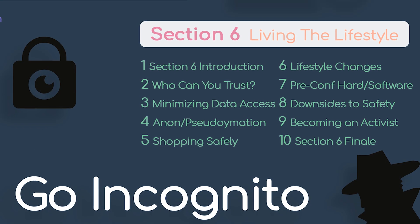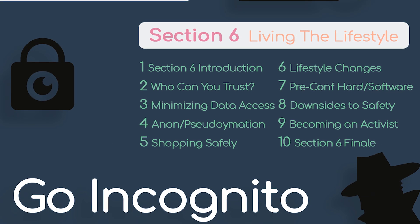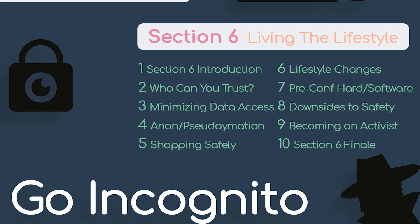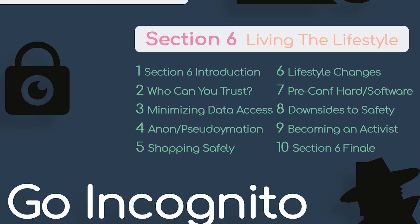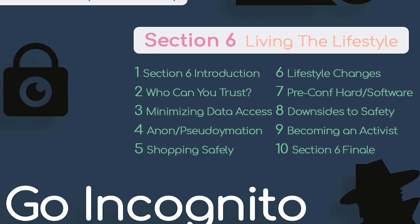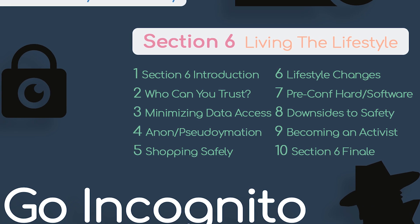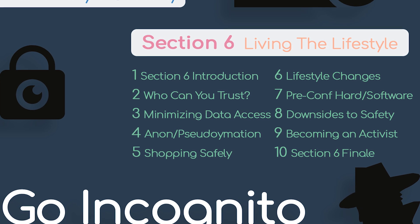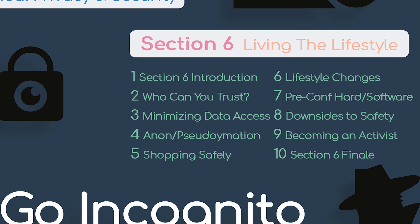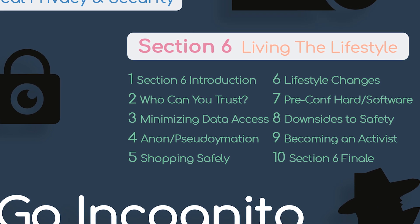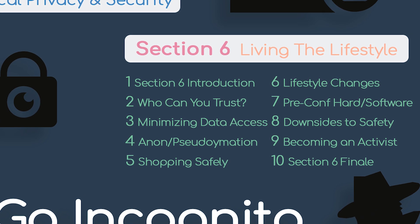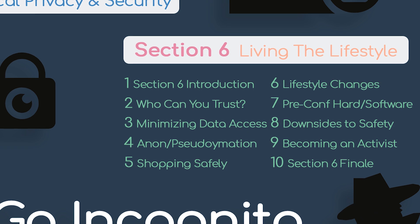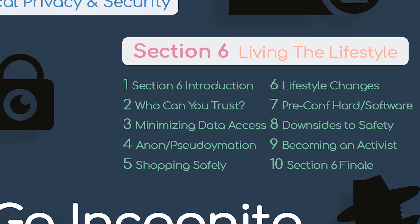Section 6 taught how to live the lifestyle. This meant discussing who you can trust, minimizing access to your data, anonymization and pseudonymization, shopping safely, lifestyle changes, downsides to being private and secure, and tips on becoming an activist yourself.